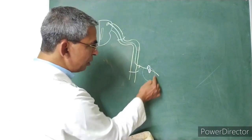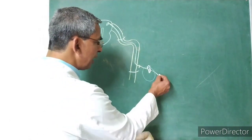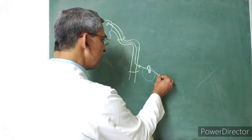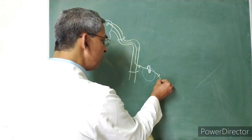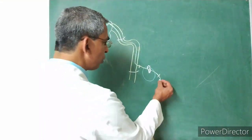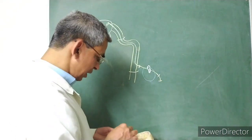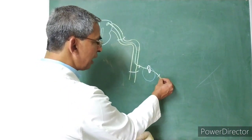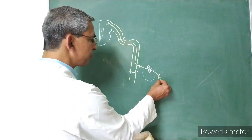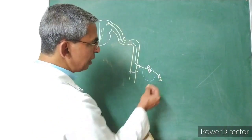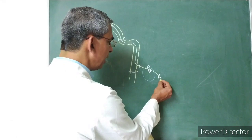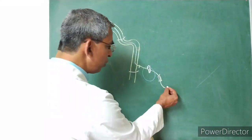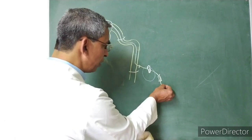The chorda tympani then passes through the anterior border of the tympanic membrane and enters through the anterior canaliculus. It comes out through the medial end of the petrotympanic fissure from the base of the skull, passing through a small canal, and emerges at the middle part of the petrotympanic fissure. It then passes medial to the spine of the sphenoid bone.